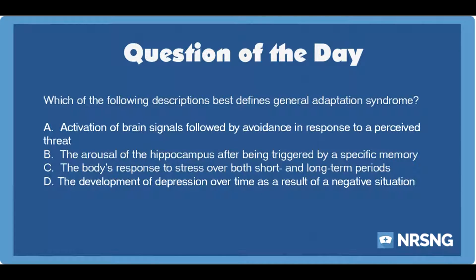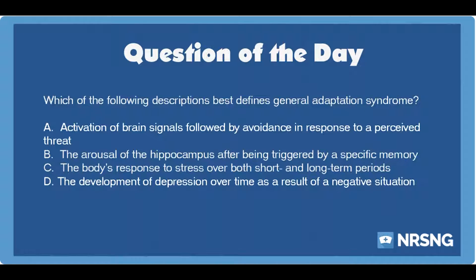Which of the following descriptions best defines general adaptation syndrome? A. Activation of brain signals followed by avoidance in response to a perceived threat. B. The arousal of the hippocampus after being triggered by a specific memory. C. The body's response to stress over both short and long-term periods. D. The development of depression over time as a result of a negative situation.